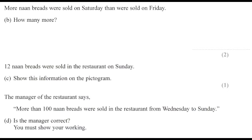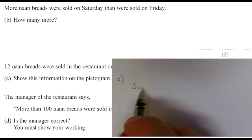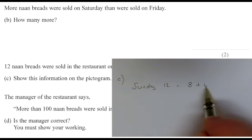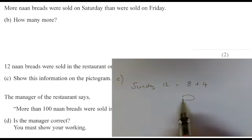So let's look at question C now. It says we've got to represent 12 naan breads. Well, if one bread is 8 and we want to get up to 12, we have to add 8 breads and then 4 loaves of bread, and 4 presumably would be represented by half a naan. So we're gonna have an 8 and a 4—that's gonna look like a full pictogram and half of that for the 4.